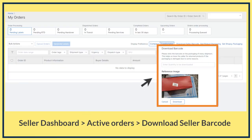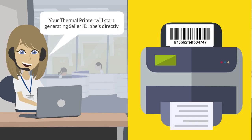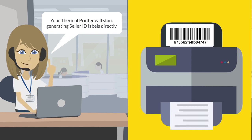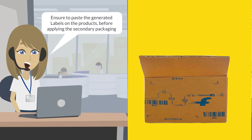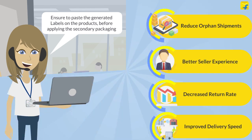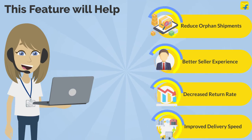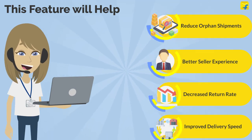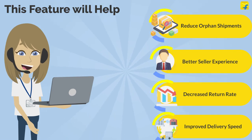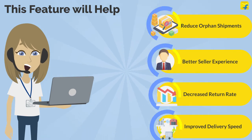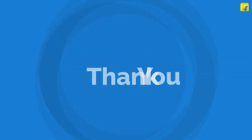Now go to Seller Dashboard, go to Active Orders and download the Seller Barcode. Your thermal printer will start generating Seller ID labels directly. Ensure to paste the generated labels on the products before applying the secondary packaging. We hope this feature will help you reduce your orphan orders and have a better seller experience on Flipkart. This will also ensure a decreased return rate and improved speed of delivery. Thank you and Happy Selling.